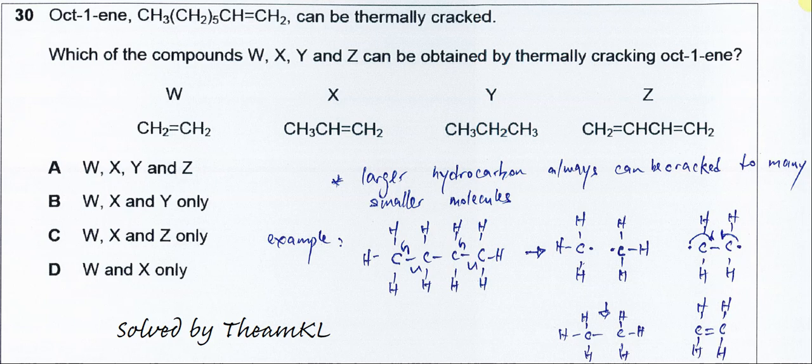Since in this question oct-1-ene is used, when this oct-1-ene is thermally cracked, it's going to form a smaller hydrocarbon. So for this W, X, Y, Z, they are all smaller than oct-1-ene, which means they are possible to form from oct-1-ene.